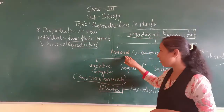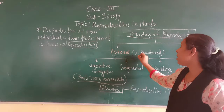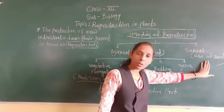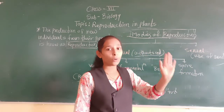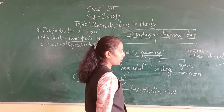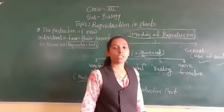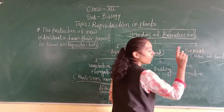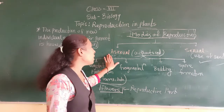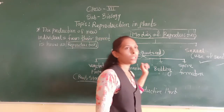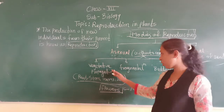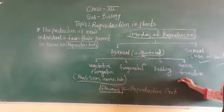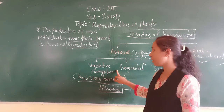An important thing to keep in mind is that in asexual reproduction there is no need of seeds. These are the two types of reproduction: asexual reproduction and sexual reproduction. First, we are going to discuss about asexual reproduction. This asexual reproduction has certain subtypes: vegetative propagation, fragmentation, budding, and spore formation. We are going to see all of these briefly.